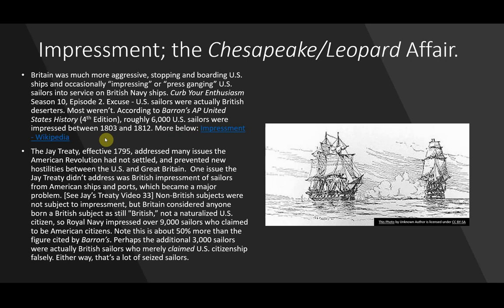The Jay Treaty, effective 1795, addressed many issues that the American Revolution had not settled, but it did prevent new hostilities between the U.S. and Great Britain. One issue the Jay Treaty didn't address was British impressment of sailors from American ships and ports, which again became a major problem. You can see Jay's Treaty in Video 33.